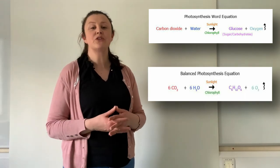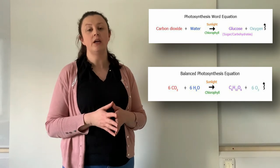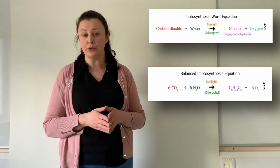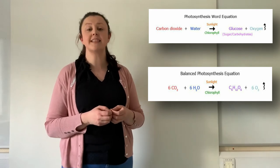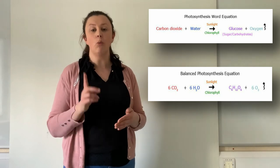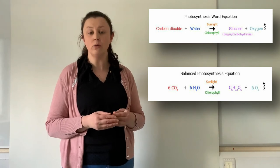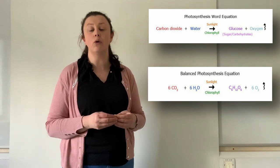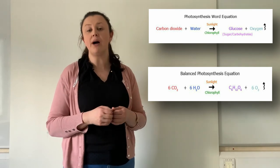And the second way to summarize this process is with a balanced chemical equation. 6 molecules of carbon dioxide, 6CO2 plus 6 molecules of water, 6H2O in the presence of sunlight gives 1 molecule of glucose, C6H12O6 plus 6 molecules of oxygen, 6O2. And remember, the sunlight is trapped in the leaves by the chlorophyll.